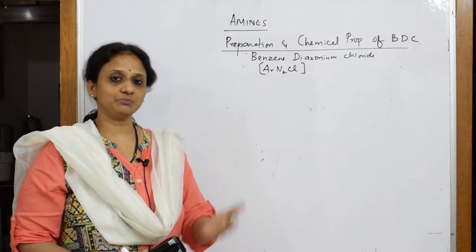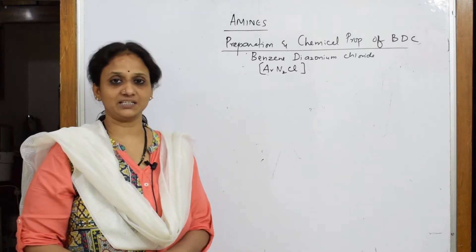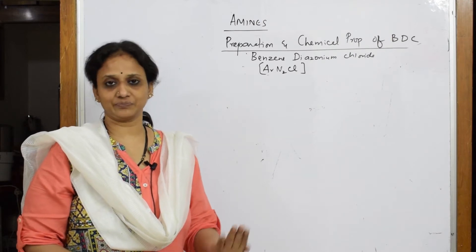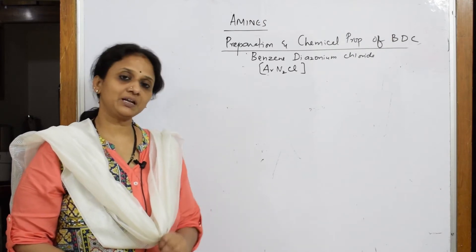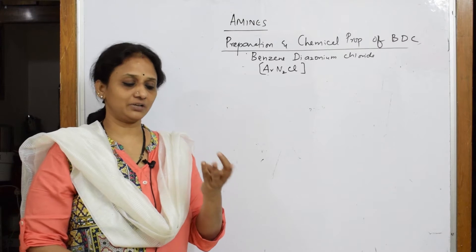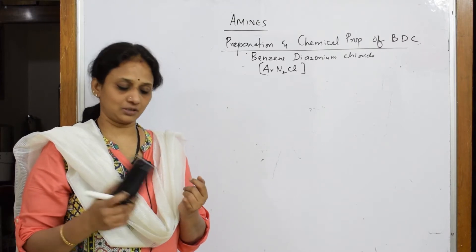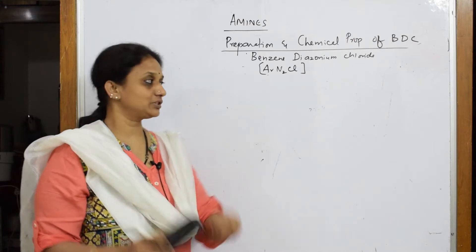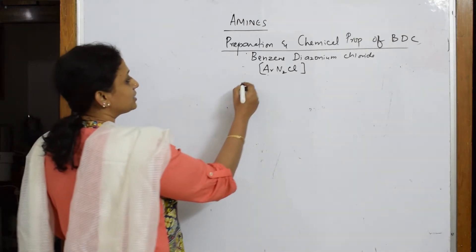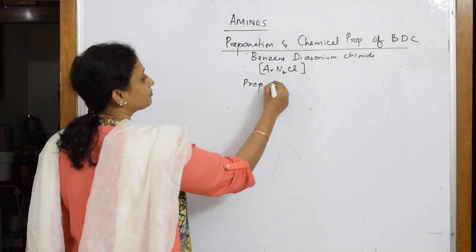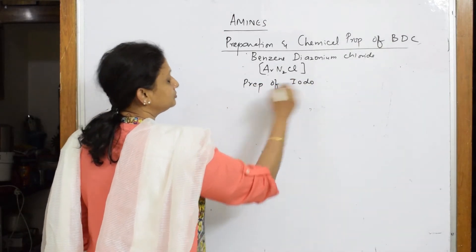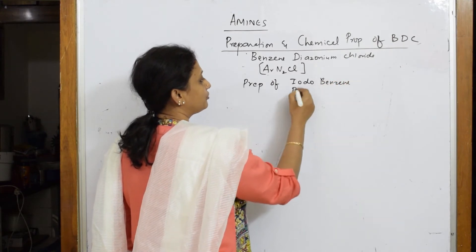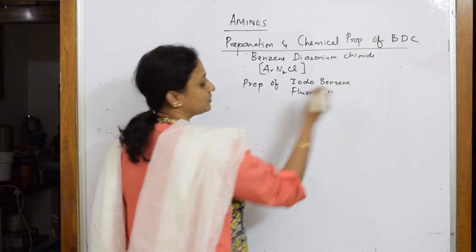What did I prepare with Sandmeyer's? I could prepare chlorobenzene, bromobenzene, and cyanobenzene. After that, I also prepared with Gatterman the same thing, chloro and bromobenzene. But did we prepare iodobenzene? Fluoro is not prepared. Chloro is prepared. Bromo is prepared. Iodo is not prepared. So we are left with two more halogens.